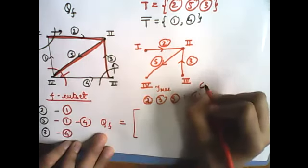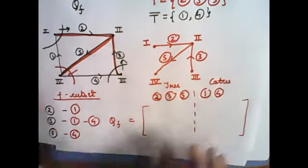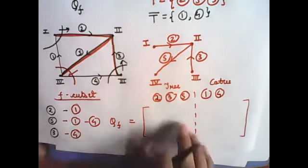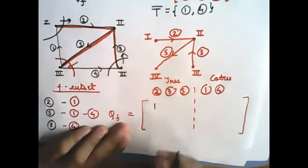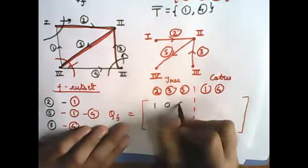Dusra half position bata raha hai co-tree ko, theek hai? Aur aap dekhiye, only one branch is present at a time. So suppose only 2 is present, 3 and 5 will be absent.